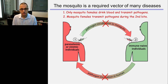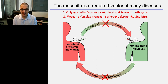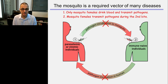This slide shows the transmission of many diseases by mosquitoes. One interesting point that not many people know is that it's only the female mosquito that drinks blood. Males don't drink blood — they actually pollinate sunflowers and drink nectar. So the female mosquito drinks blood and transmits pathogens, and she needs that blood to develop eggs.